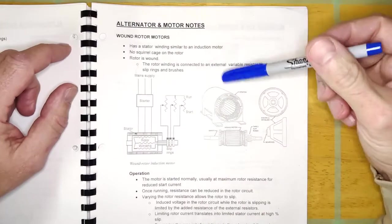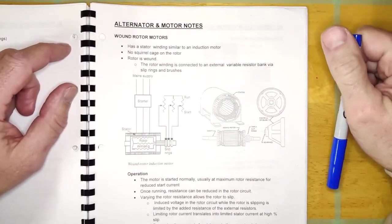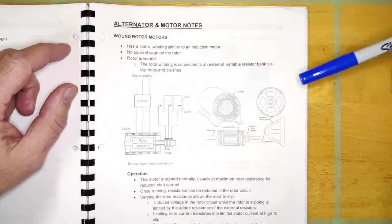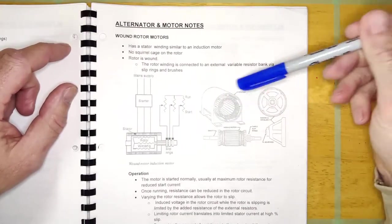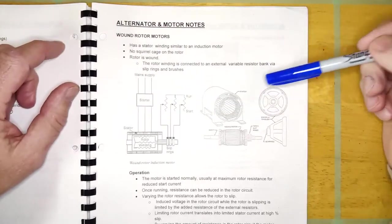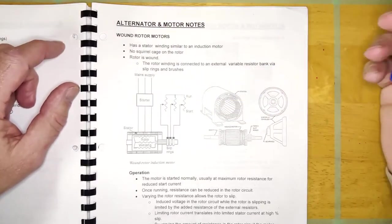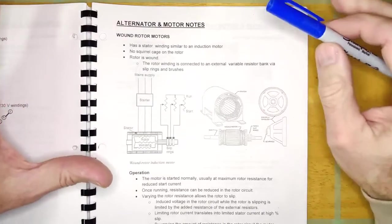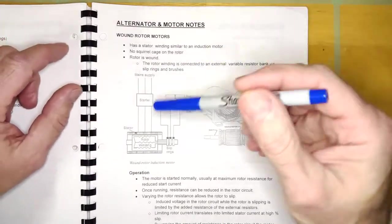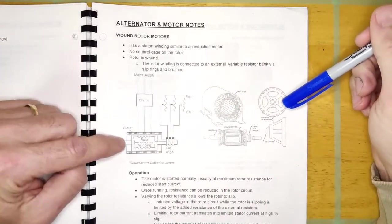And so, in our little handout here, it shows kind of some pictures of the wound rotor motor. And the first thing you need to know about it is it's got the same stator winding that every other induction motor has. It's going to run at sync speed, depending on the frequency and the number of poles. And so, all that is exactly the same as any other induction motor.